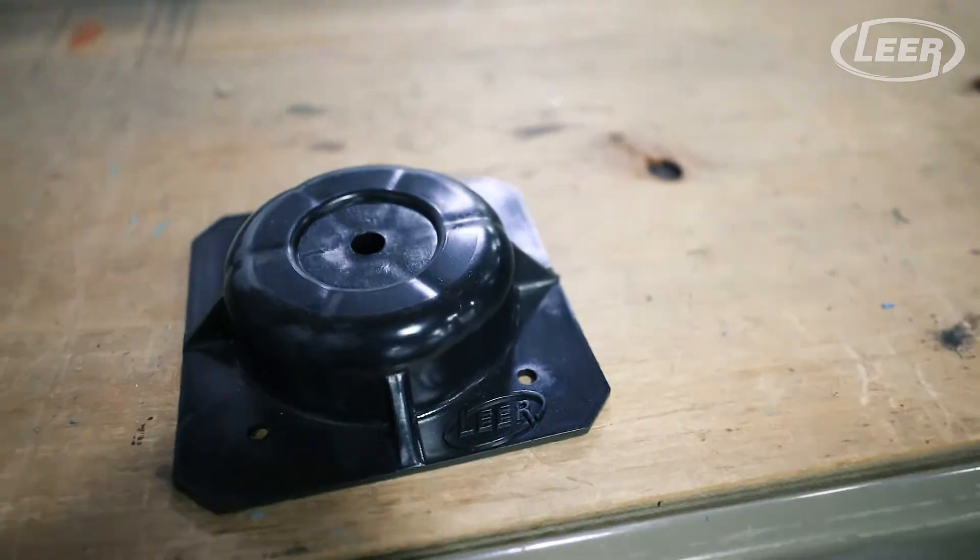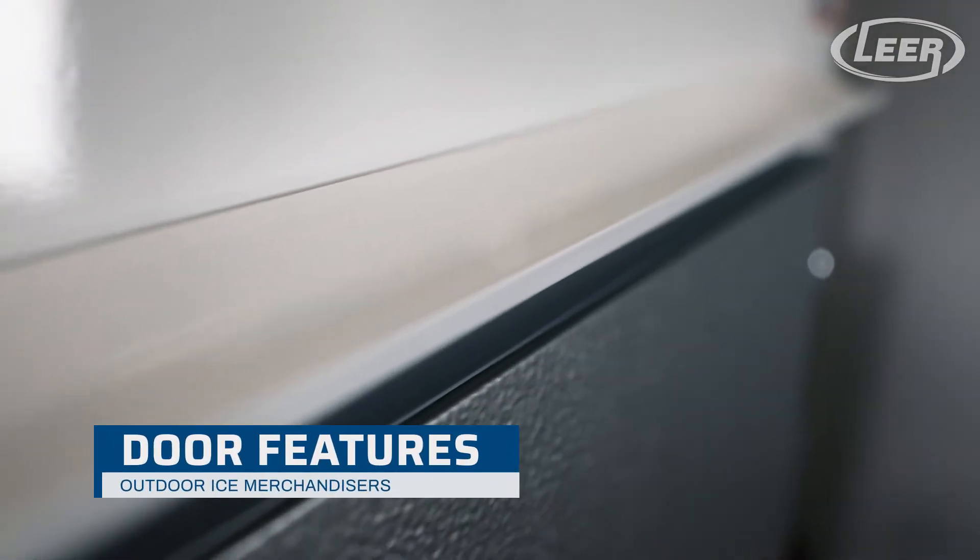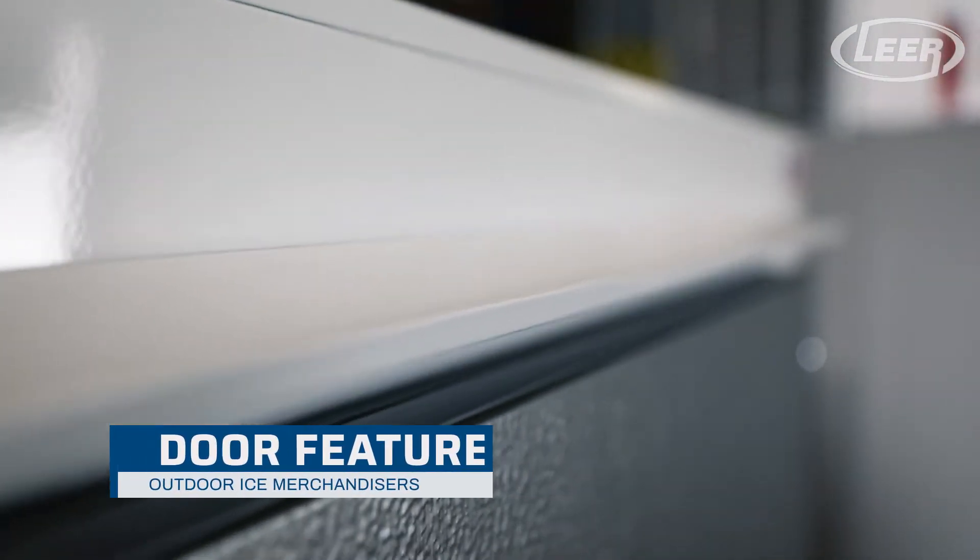The bottom of the merchandiser features PVC skid plates. Now to the front. Above the doors are rain shields to divert rain from dripping onto the doors or into the unit.